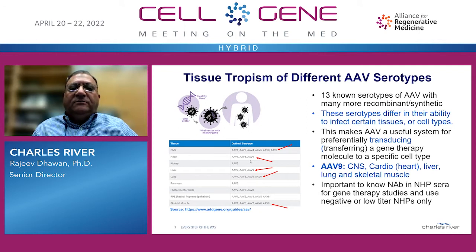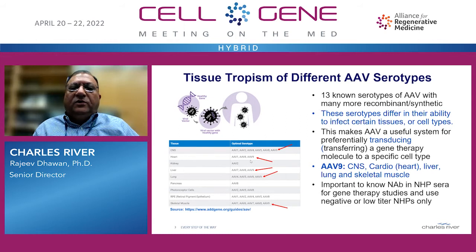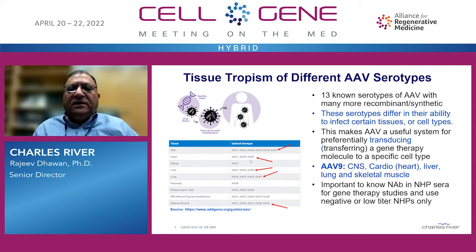AAV9, on the other hand, can be used for CNS, cardio, liver, lung, and skeletal muscle-related diseases. But overall, it is important to know neutralizing antibodies in non-human primate sera for gene therapy studies, and to use negative or low titer non-human primates only.